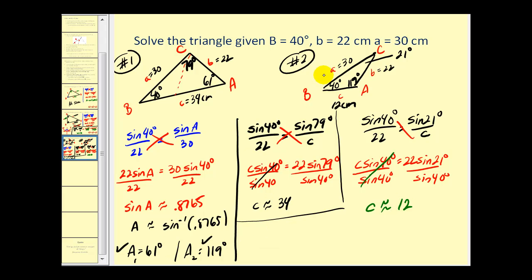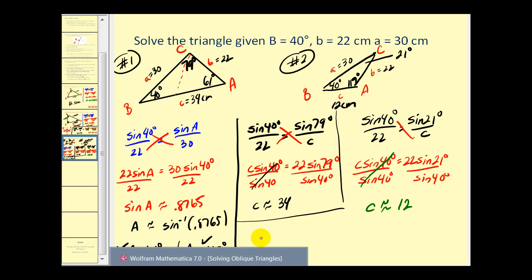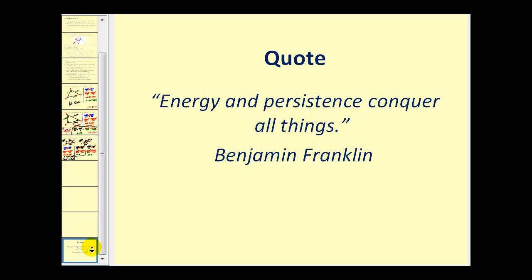The key to finding the second solution is recognizing you have side-side-angle where the given angle is acute. When finding the unknown angle, find both the acute and obtuse angles with the given sine value. Once you find the obtuse angle, check whether the sum of angles exceeds 180 degrees — if it doesn't, you have a second valid triangle and must set up and solve two different triangles. I hope you found this video helpful. Thank you for watching.